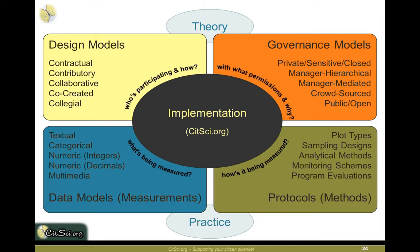In crowdsourcing approaches, the projects are very public and open. Data collected can vary from text to categorical, numerical, integer, decimal, and multimedia. Protocols can involve plots and different sampling designs — opportunistic, random, et cetera. There's a lot to think about, but fortunately with any citizen science project you have scientific liaisons — at the Banner Project, the Natural Resource Ecology Lab, the University of Montana, or Forest Service staff — to partner with and get advice on these different aspects.